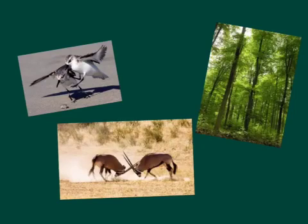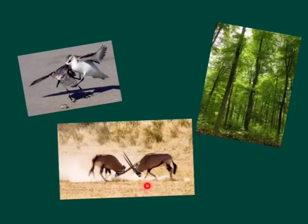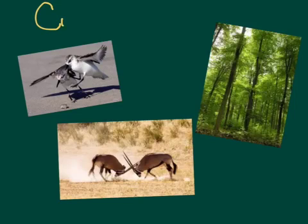So, what's happening in all of these pictures? It might be more obvious in the pictures of the birds right here — two males competing for mates, two birds competing for food, and right here we have trees competing for things like sunlight and water. What we're talking about right now is competition.